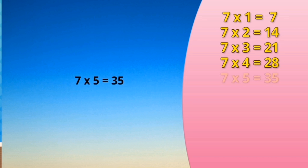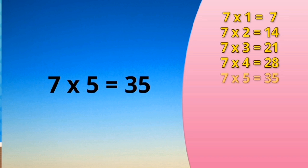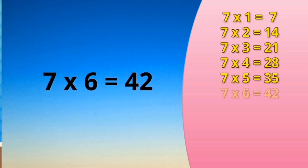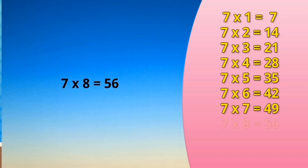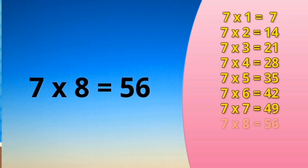7 times 5 is 35. 7 times 6 is 42. 7 times 7 is 49. 7 times 8 is 56.